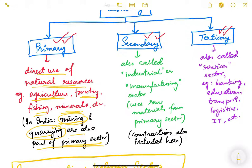Quarrying, on the other hand, is extracting material that is directly visible on the earth's surface — taking things from the surface without digging. So these are similar activities but with a slight technical difference. In some countries, mining and quarrying are considered part of the secondary sector because processing and machinery are involved. However, in India, mining and quarrying are part of the primary sector — please keep this in mind.